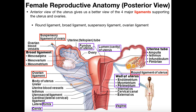If we follow the fallopian tube around, we see this region that kind of bulges a little bit — this part is called the ampulla. We can see it better over here: this region is the ampulla. Just flanking the ampulla, we have this region that projects into finger-like projections. The region at the base of these fingers is called the infundibulum, and then these finger-like projections coming off of the infundibulum are referred to as fimbriae.